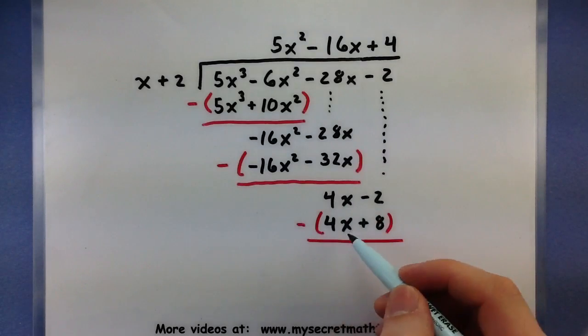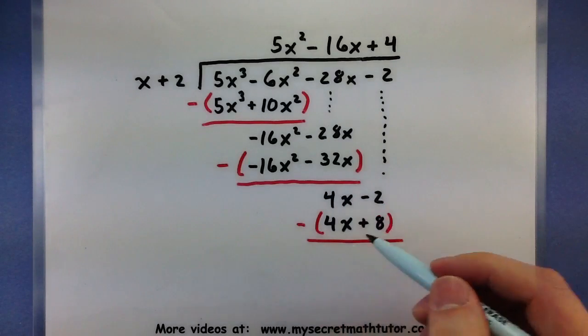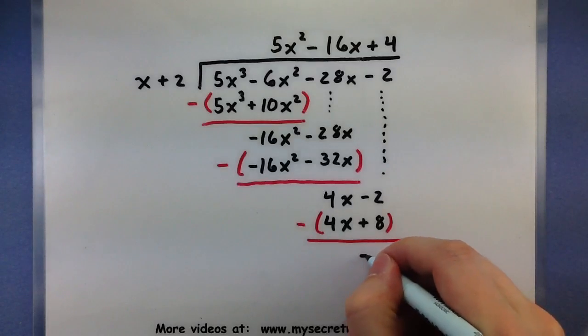So 4x - 4x, gone like it should be. A -2 minus an 8, give me a -10.